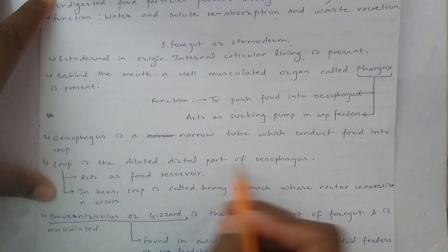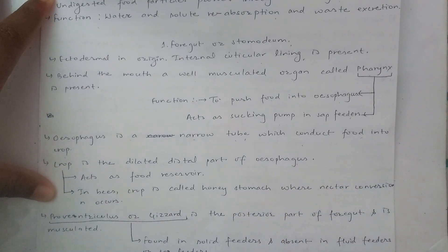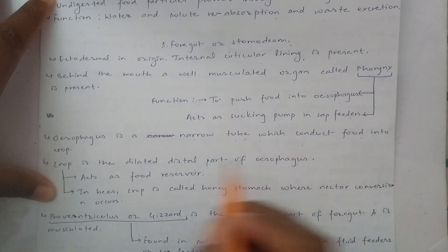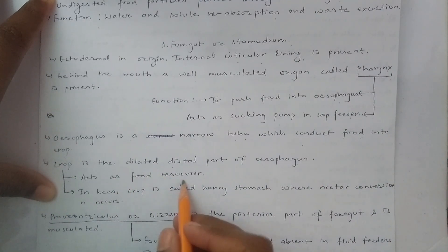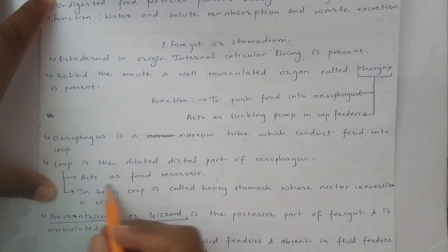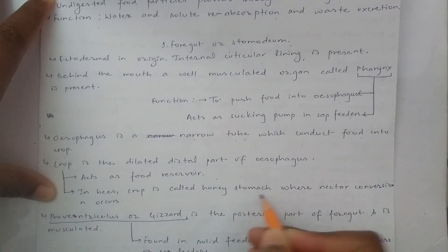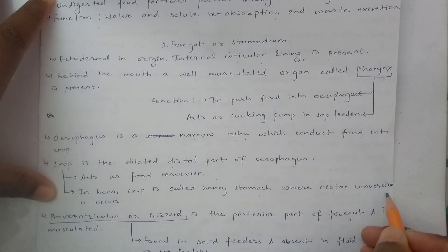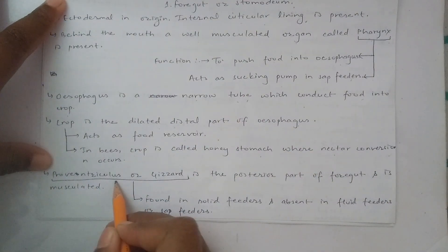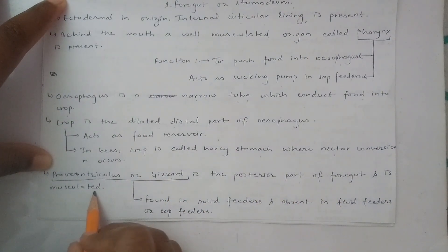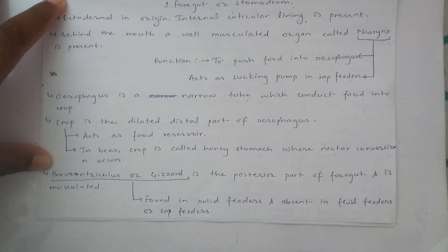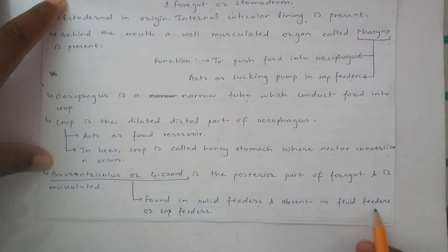The crop is a dilated, distended part of the esophagus used for food storage. The gizzard, also called proventriculus, is a posterior, well-musculated organ. The gizzard's function is grinding food. It is present in solid feeders, while liquid feeders or sap feeders may lack it.